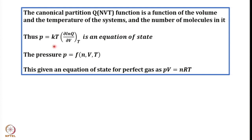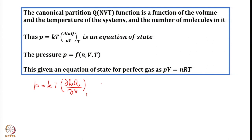Now come back to this expression: P = kT (∂ ln Q / ∂V) at constant temperature. This is a purely general equation. We did not specify whether it can be used only for ideal gases or only for non-ideal systems. But let us first apply it to monatomic perfect gas and see what happens.